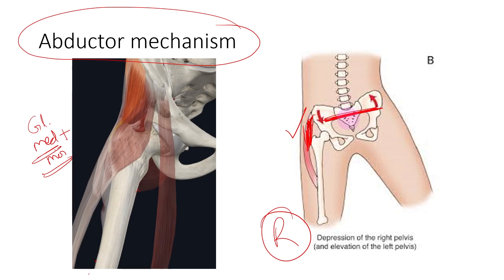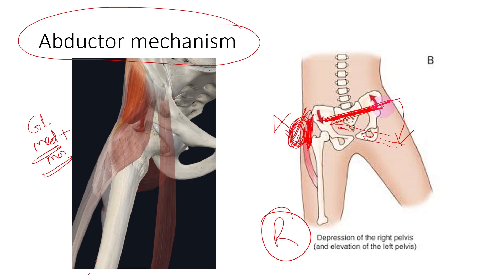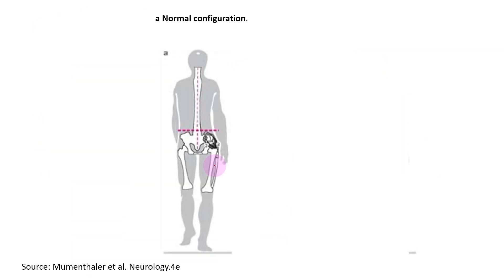If this muscle is weak, the articulated pelvis will not remain stable — that part will sag downwards into a new position. This sagging does not occur because the muscle contracts, so contraction of this muscle is what causes stabilization of the articulated pelvis.